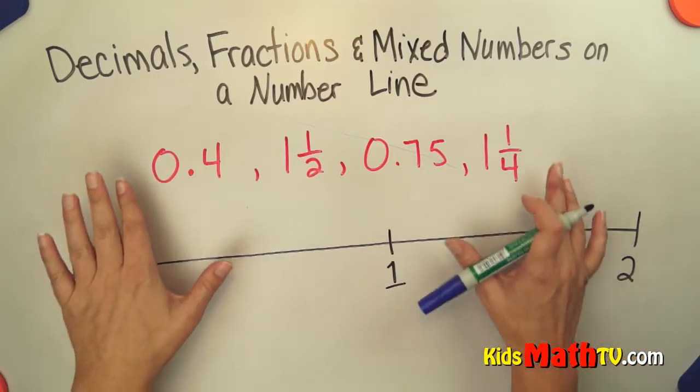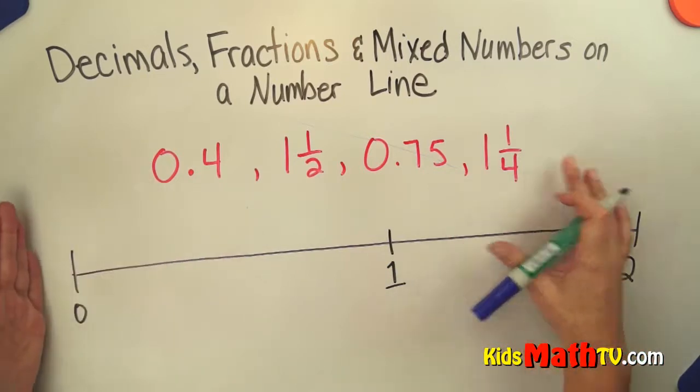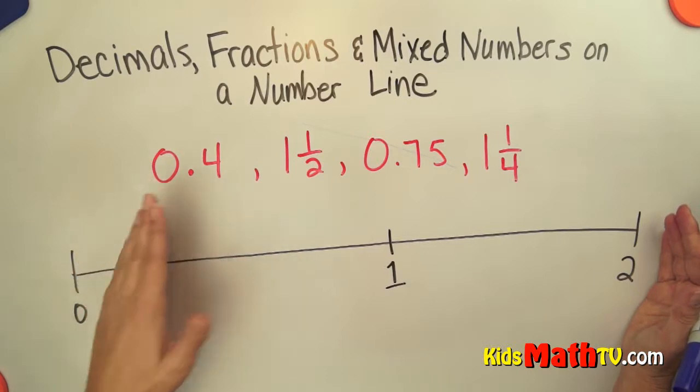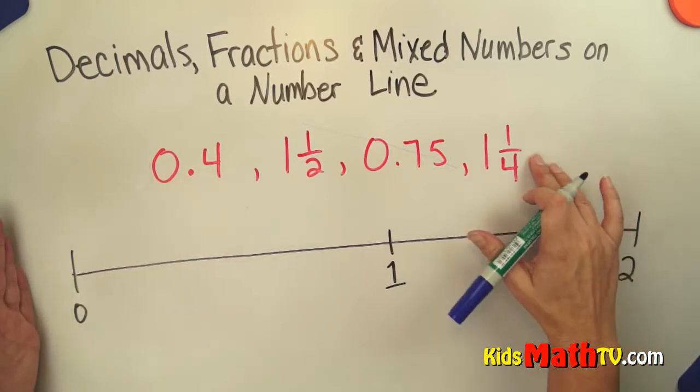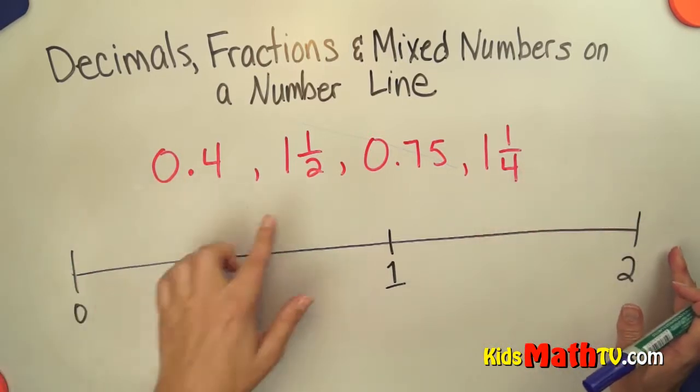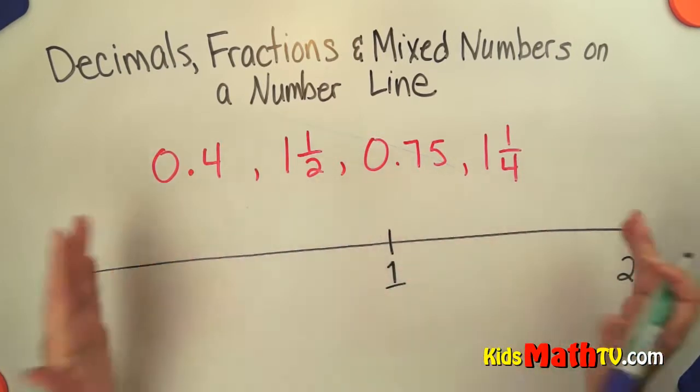So I have a number line here. All of my numbers are between 0 and 2, so no negative numbers and nothing is higher than 2. So I have 1½, I have 1¼, but nothing is bigger than 2.